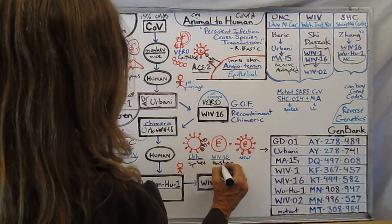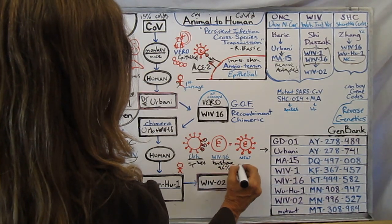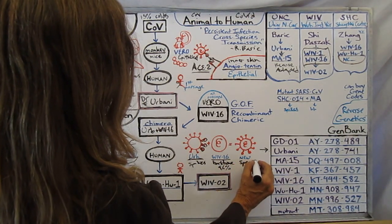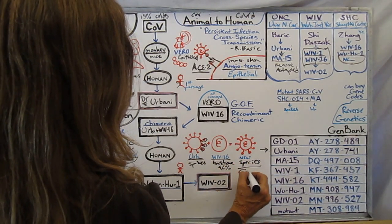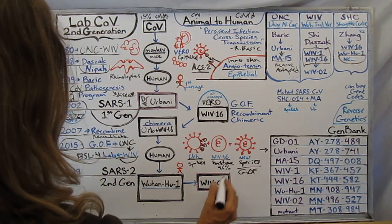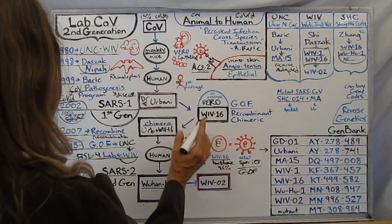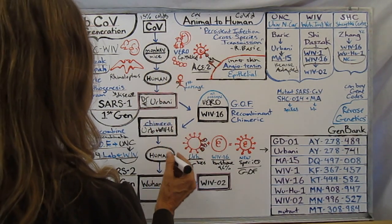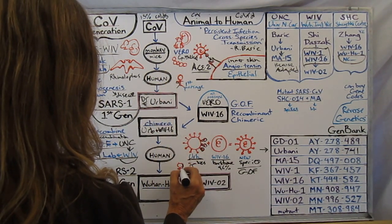And then the WIV-16 is what they call the backbone, that's the rest of it, it's 96 percent of it. And then you're getting a new species and this is gain of function for sure. So they then again tired of running it through the vero monkey cells so they run it through a human body.